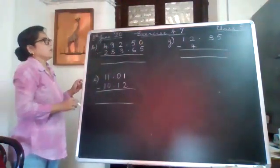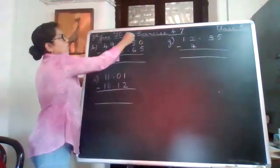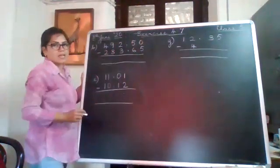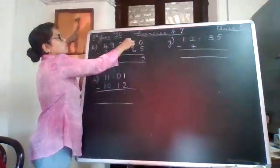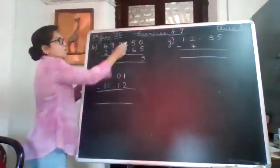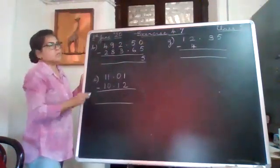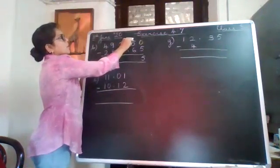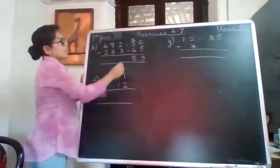Now 0 minus 5 is not possible, so we borrow from here. Then it becomes 10, and 10 minus 5 is 5. We have borrowed, so this has become 4. Now 4 minus 6 is again not possible, so we borrow from here. Then it becomes 14, 14 minus 6 is 8. Then put the point in its place.